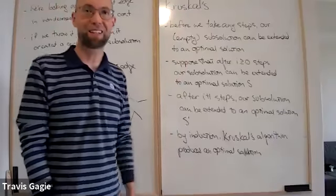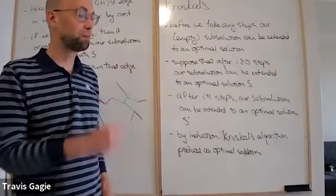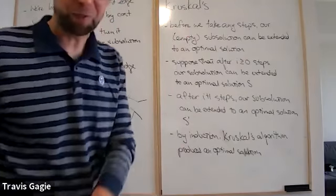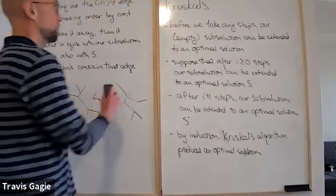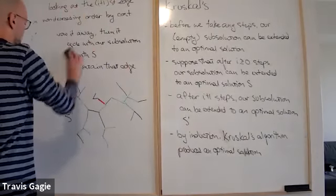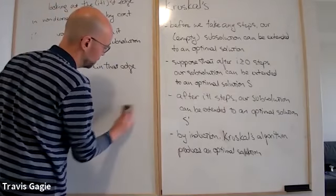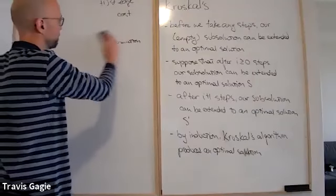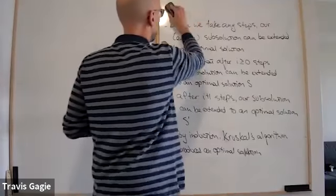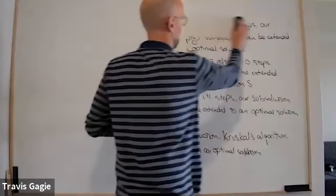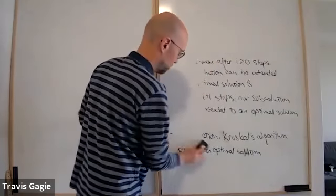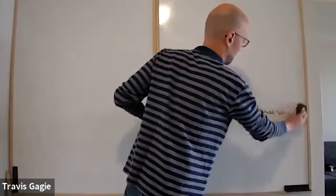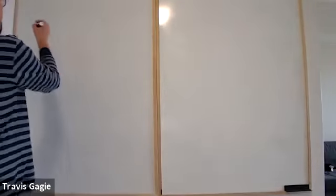This is Prim's algorithm. It always maintains a tree, which is nice. The solution is not necessarily the same tree as Kruskal's — it's not necessarily unique and depends on how you break ties. Now let's do the proof of correctness for Prim's.